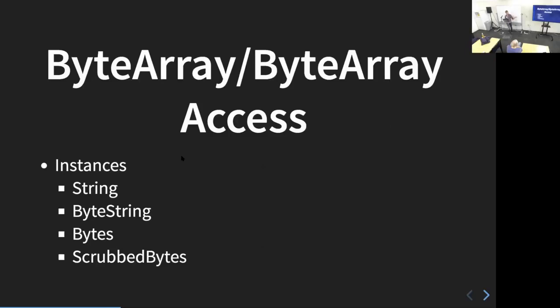The instances you'll mostly see are String, ByteString, Bytes, and ScrubbedBytes. String and ByteString you're familiar with; Bytes and ScrubbedBytes are from the memory package itself. Bytes is basically a byte string with a little bit of data removed — because it doesn't track certain information like the offset of its slice, you can't slice from it and keep the same byte string. It stores less data, which makes generating many of them a little faster, but in practice byte string is roughly just as fast and interoperates better.